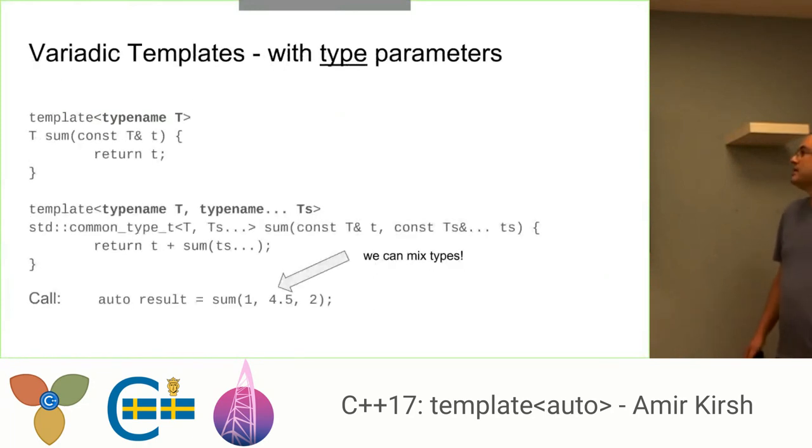You probably remember the rules for what can be the non-type parameter. This is nice, this is just a reminder. When we come to variadic templates with type parameters, we can see that each type can be different, which means you have, for example, a sum, and you want to sum different types. This is doable. So T can be any type, and you can see that you can mix the types quite easily. No news here.